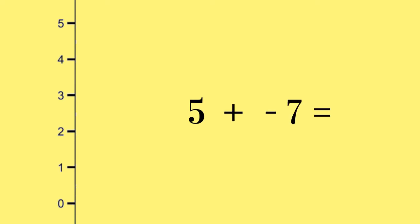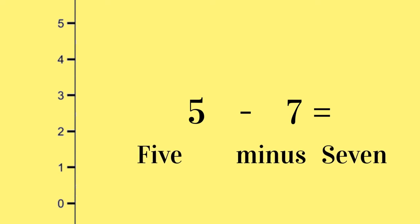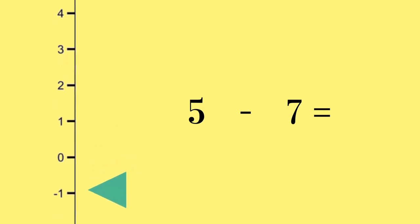This means you have to subtract and count down the number scale. For example, if you take 5 plus negative 7, the plus sign disappears, leaving you with 5 subtract 7. It might be easier to remember this by saying 5 plus minus 7 — then, when you get rid of the plus, you have 5 minus 7. You can then work this out by starting at 5 and counting 7 down the number scale to reach your answer, negative 2.